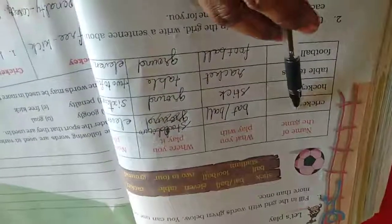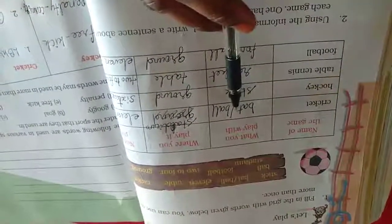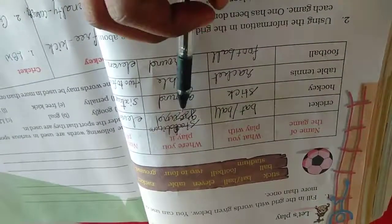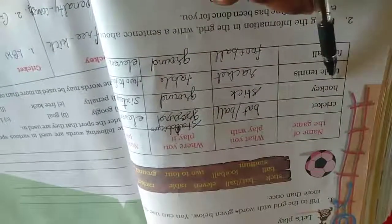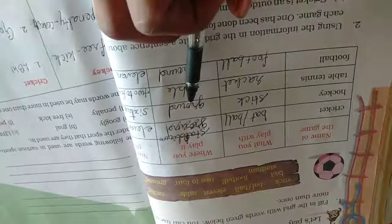What are the name of the game? Cricket. For cricket, what is the thing we are using? Bat and ball. Where we will play? Stadium. Number of players? Eleven. Hockey: stick. Where we will play? Ground. How many players? Sixteen players.